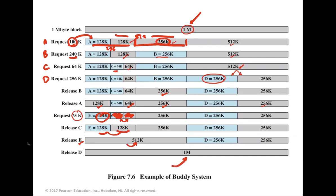Process E (75 KB) is assigned to the available 128 KB block. When C is released, its 64 KB and the other free 64 KB buddy merge into 128 KB. When E is released, two 128 KB buddies merge into 256 KB, then merge with the other 256 KB to form 512 KB, and releasing D returns the memory to one full 1 MB block. This example shows the sequence of allocations using the buddy system: splitting until a best fit is found and merging freed buddies back into larger blocks.